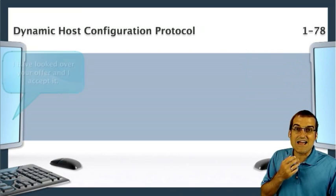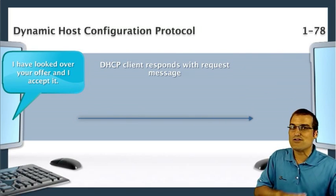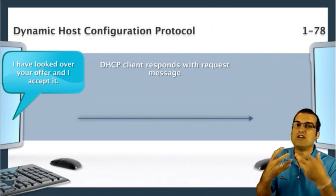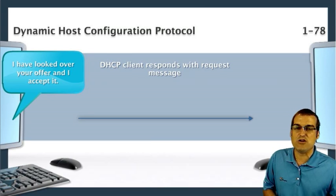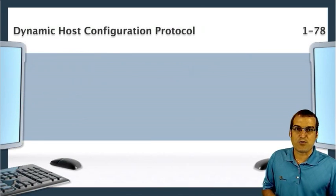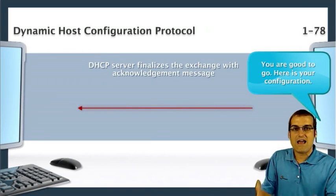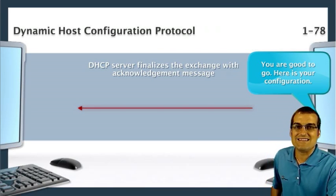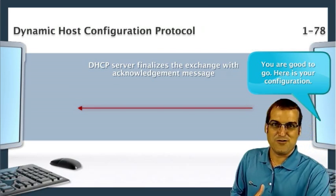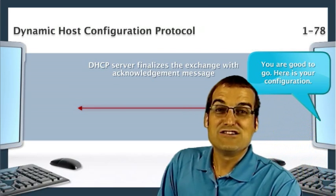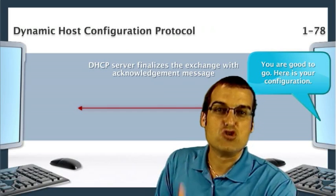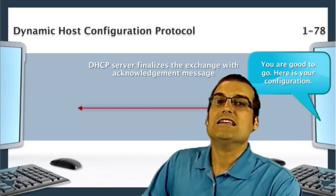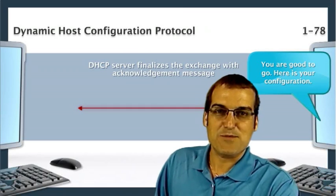Next, the client says it has looked the offer over, it looks great, and goes ahead and requests that information. In the fourth step of the process, the server acknowledges that the client does indeed have that information. So remember DORA when it comes to this important four-step DHCP process.